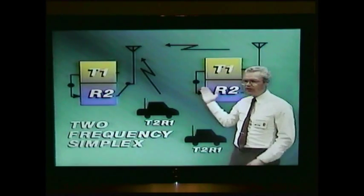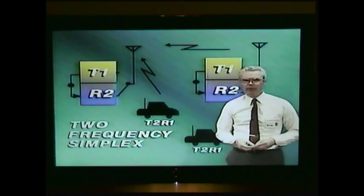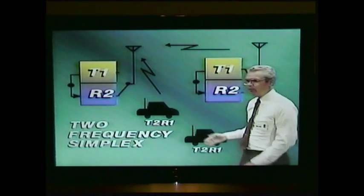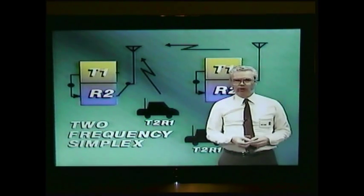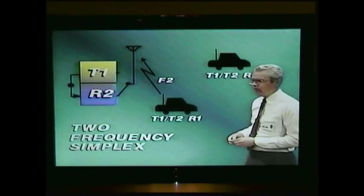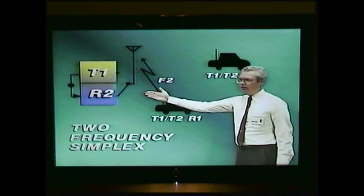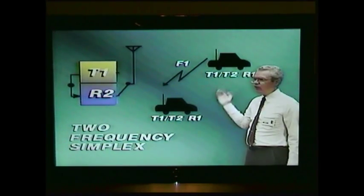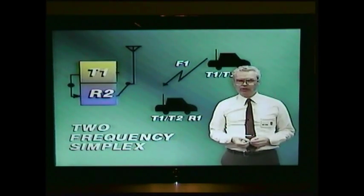If another base station is on the same frequency pair, he can operate his T1 transmitter and will not disturb mobile reception on the other station's R2. Direct mobile-to-mobile communication is not possible because of the frequency arrangement in this system, but that's not always a requirement. One taxi cab normally has no need to talk to another taxi cab. If direct car-to-car communication is needed, the mobiles can be provided with a second transmit frequency T1, so the operator can switch to T1 and any other mobile within range will hear him. The two-frequency simplex arrangement thus provides more communication by eliminating the base capture problem.